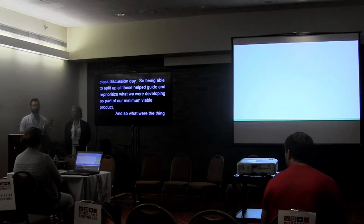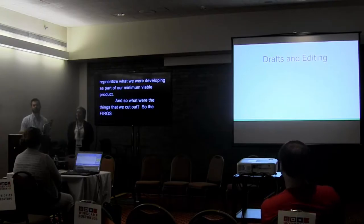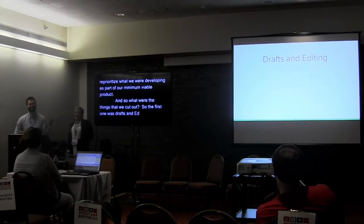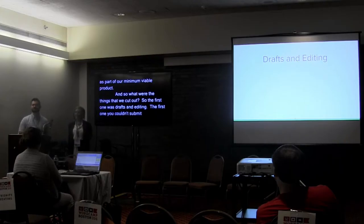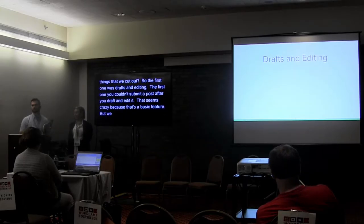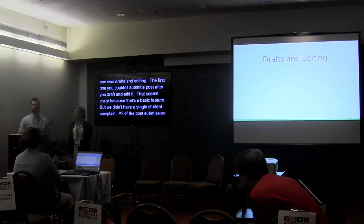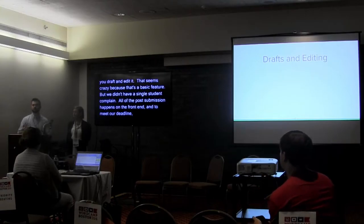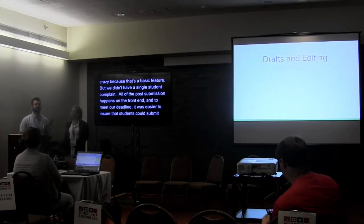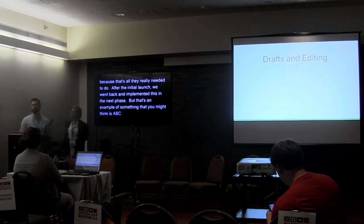So what were the things that we cut out? The first one was drafts and editing. We built a blogging platform where you couldn't save a draft or edit your post after you submitted it. That sounds kind of crazy because it seems like a basic feature of a blogging platform — and we didn't have a single student complaint about it. Which was really interesting because for us it seemed like a basic feature. All post submission happens on the front end, and to meet our deadline it was easier to ensure that students could submit. After the initial launch we went back and implemented this in the next phase. That's an example of something you might think is absolutely critical, but users didn't miss it.